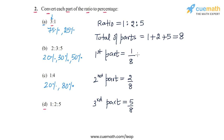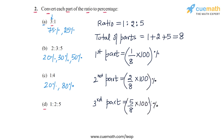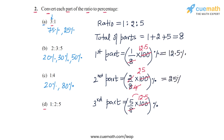To convert each part to percentage form, we simply multiply each fraction by 100. 1 by 8 into 100 — 100 by 8 is 12.5 — so the first part is 12.5%. 2 by 8 into 100 — 2 by 8 is 1 by 4, and 100 by 4 is 25 — so the second part is 25%. 5 by 8 into 100 — 100 by 8 is 12.5, and 5 into 12.5 is 62.5 — so the third part is 62.5%. The answer for part D is 12.5%, 25%, and 62.5%. With this we have completed question number 2.